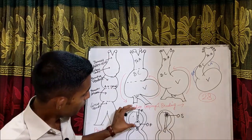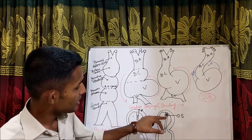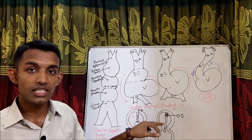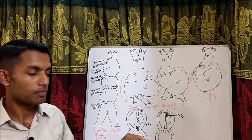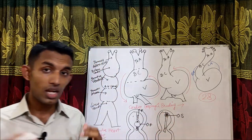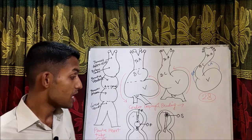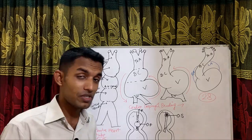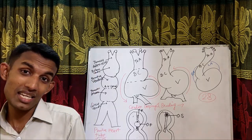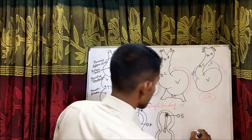Before the full completion of septum primum, there is cell death in the upper portion of the septum primum, and collectively all these perforations produce an opening called ostium secundum. If, for any reason, this ostium secundum does not close and persists, then it becomes ostium secundum ASD.